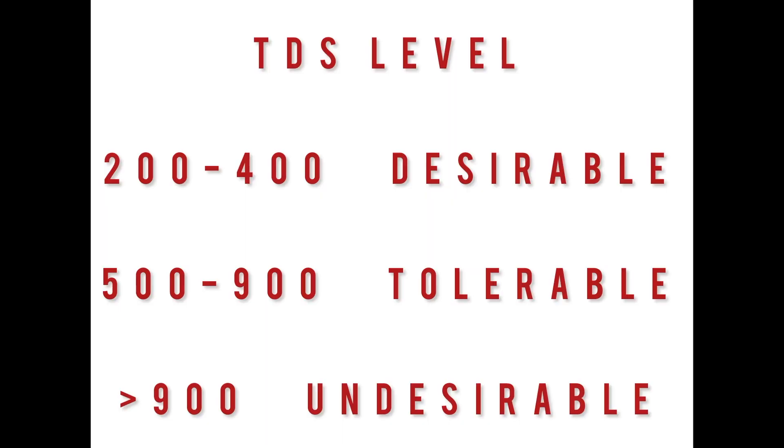When TDS becomes very high, there is a good chance that there is a high quantity of heavy ions in the water which are damaging to your health. The WHO defines the ideal limit of TDS for drinking water as 200 to 400. The BIS norms of India define it up to 500. Water from 500 to 900 is bad but not very bad, but anything above 900 is very hard water and unacceptable for drinking. Water above 900 TDS has a real possibility of containing heavy metal ions.